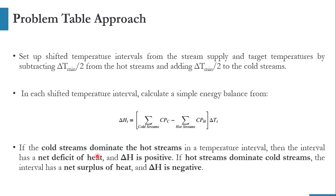The problem table approach is comparatively easier than the graphical method. We will be using the shifted temperature intervals from the stream supply. For the hot stream, we will subtract delta T min over 2 from the values, and for the cold stream, we will add delta T min over 2. In each shifted temperature interval, we calculate a simple energy balance: delta H_i equals (CP of C minus CP of H) multiplied by delta T_i.